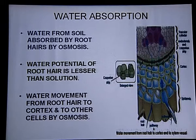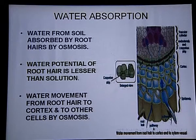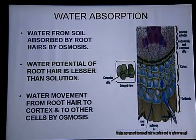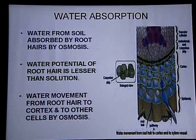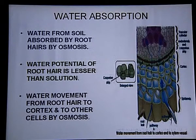Now let's see — for water absorption, which is our main topic, we have covered related terms: imbibition, diffusion, osmosis, plasmolysis, and deplasmolysis were discussed in the last lecture. Today we discussed diffusion pressure deficit and water potential. These terms are very important because only then can we understand how plants absorb water and how water reaches different parts of the plant.